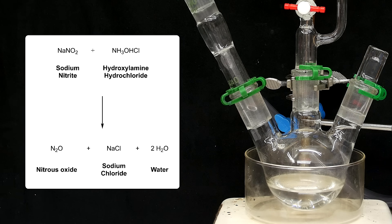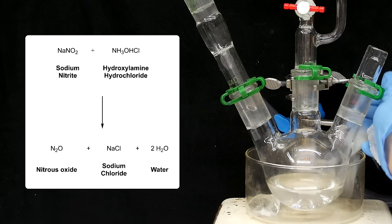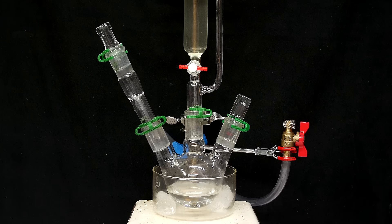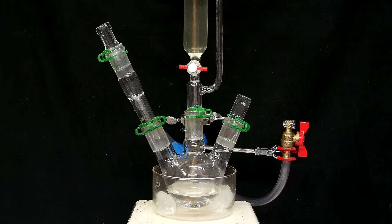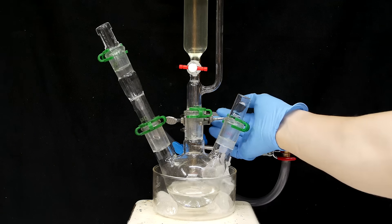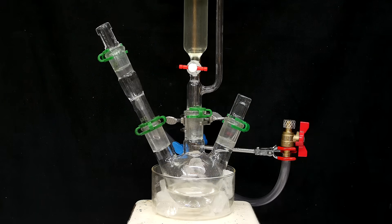They'll react together to form nitrous oxide, water, and salt, but it'll also produce a decent amount of heat. The nitrous oxide will be pushed out of the flask, through the tube in the back, and it'll make it to the valve. Right now, it's just open to the air, but I'll soon be attaching a balloon there.